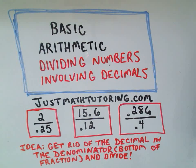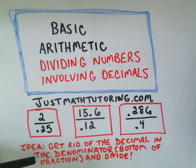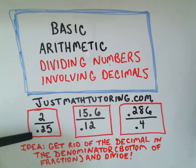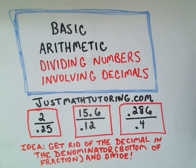The basic idea, the way I do these, is I get rid of the decimal in the denominator. Basically get rid of the decimal in the bottom of the fraction, and then I just do division.